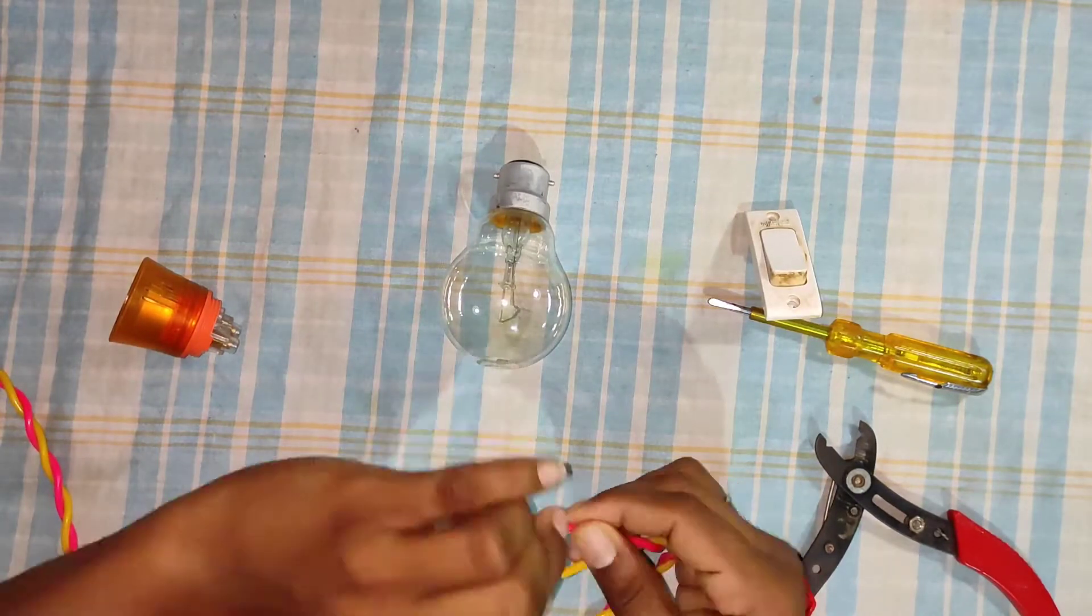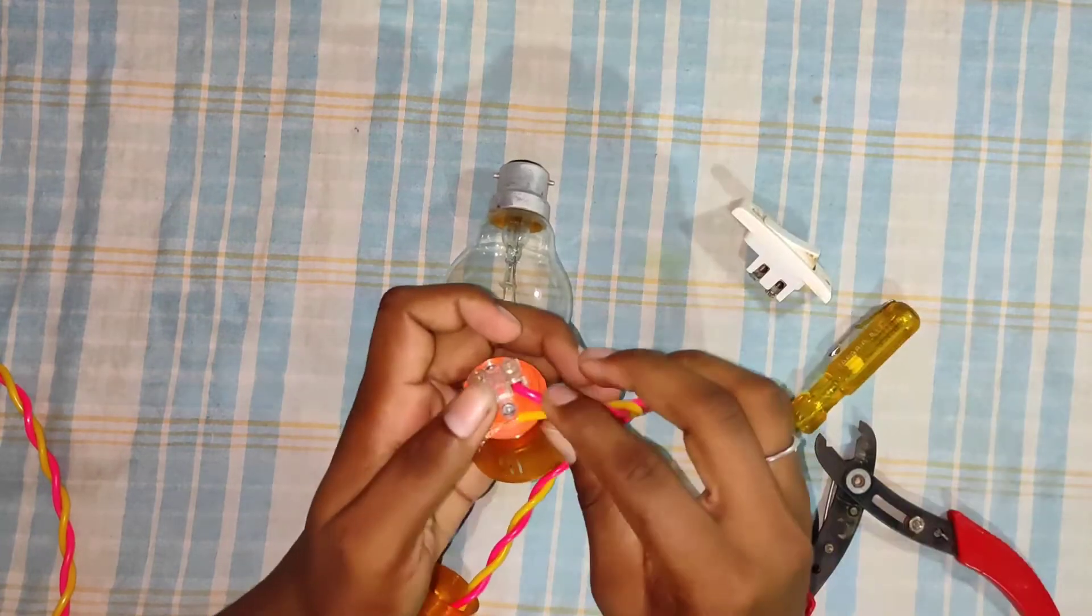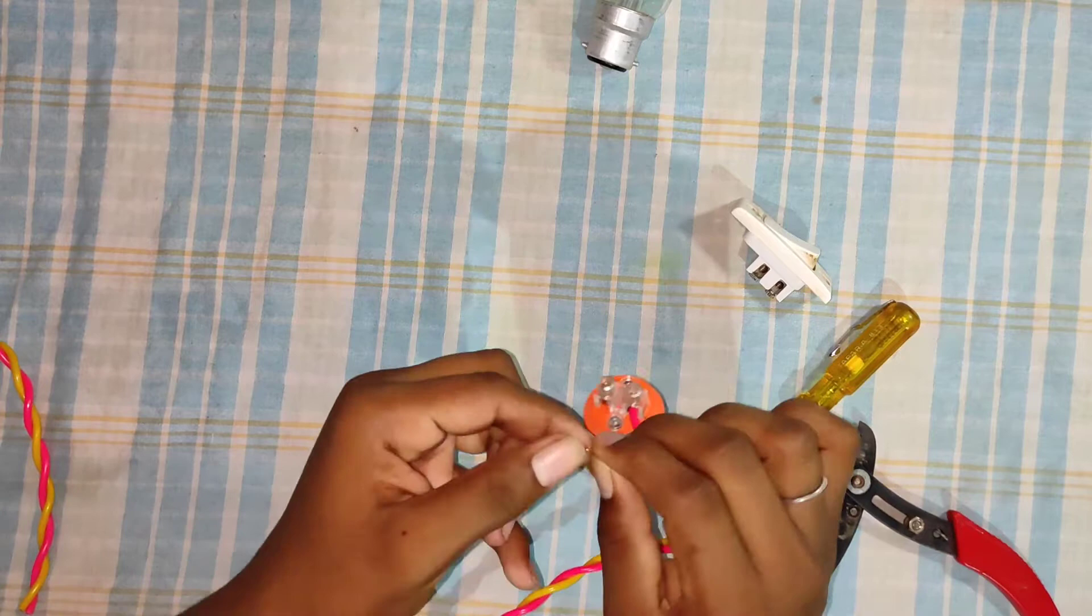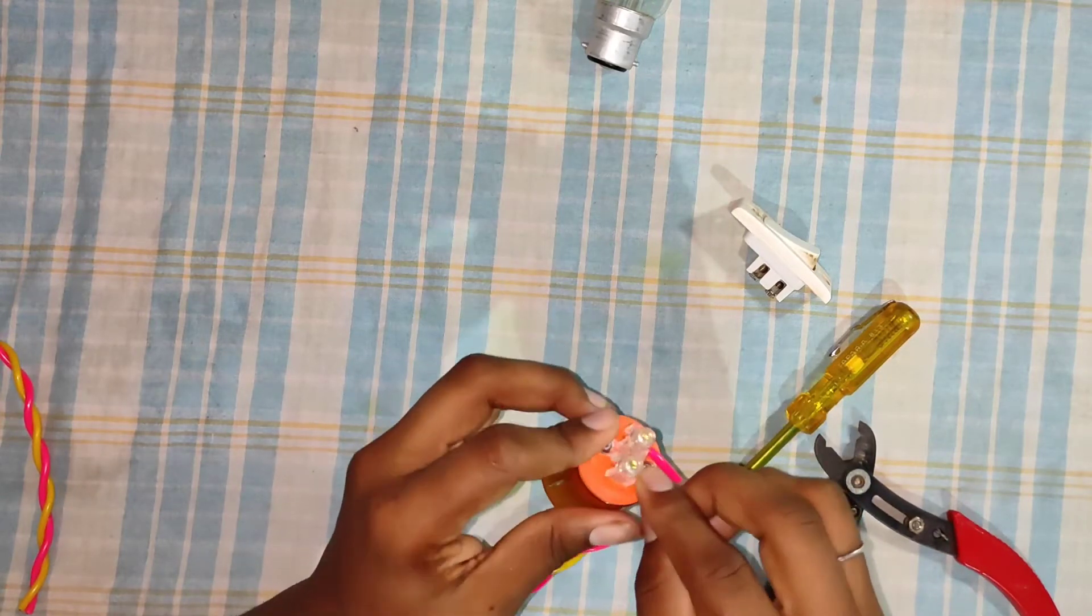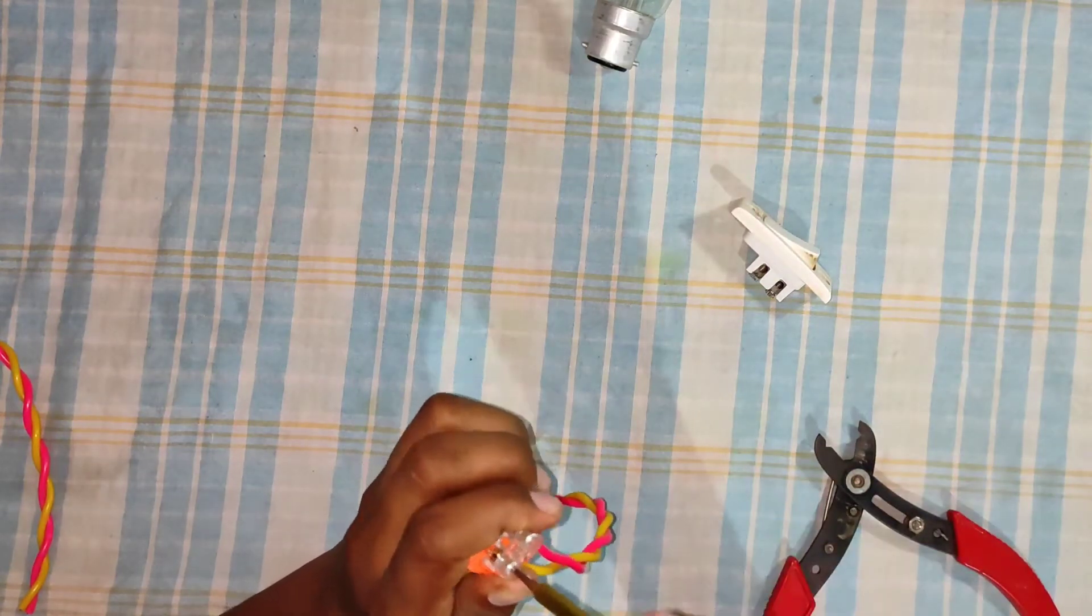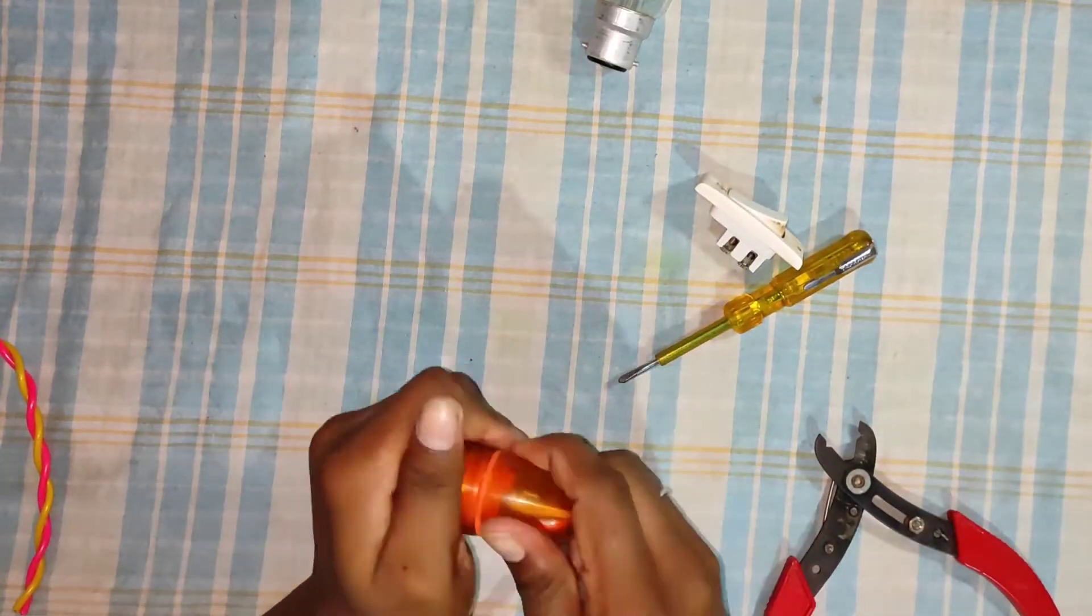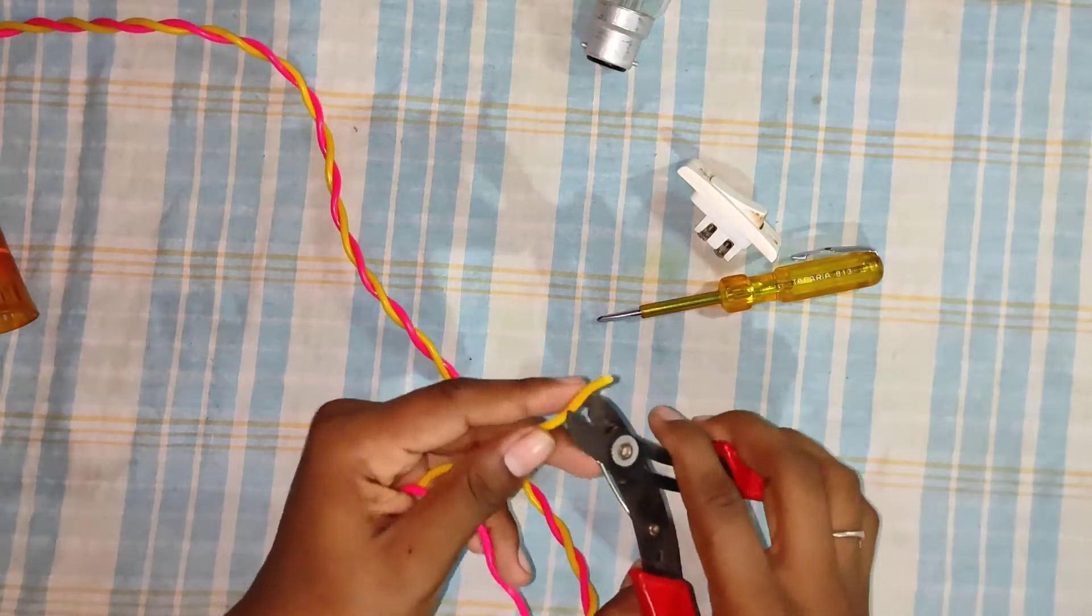One bulb holder. This is a tight screw. Tighten it securely. This is the second time. Make sure the screws are tight.